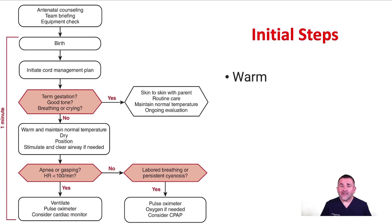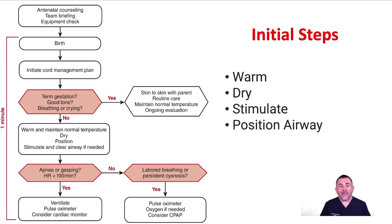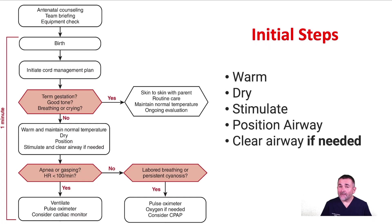We will place the infant under a radiant warmer, dry and stimulate, and don't forget to remove the wet linen. Position the airway in the neutral or sniffing position. To help maintain the correct position you may place a small rolled towel under the infant's shoulders. A shoulder roll is particularly useful if the infant has a large occiput from molding, edema, or prematurity. Clear the airway if needed. Remember, routine oral, nasal, oropharyngeal, and endotracheal suctioning is not recommended.